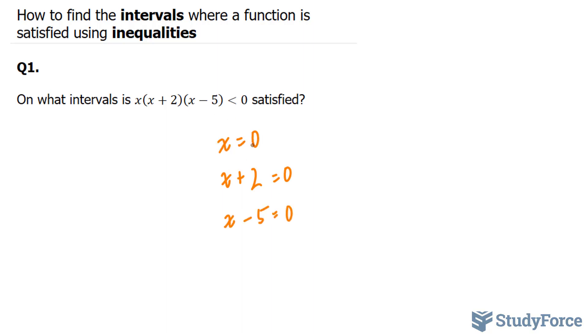Now for this one, we already know that x is equal to 0. For this one, if we solve for x, we get x = -2. And for this, if we solve for x, we get x = 5. So our critical points for question number 1 are 0, -2, and 5.